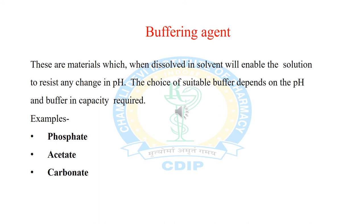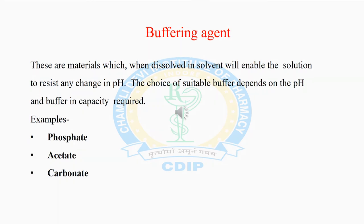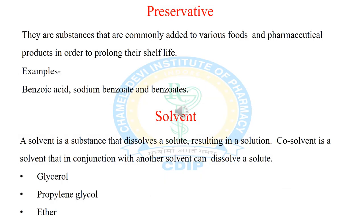These buffering agents are used to make a stable emulsion. The next additive is preservative, which is a very important additive in any pharmaceutical formulation. Preservatives are used to prevent microbial growth. They are substances commonly added to food and pharmaceutical products to prolong shelf life and prevent the growth of microorganisms. Examples of preservatives are benzoic acid, sodium benzoate, and parabens.